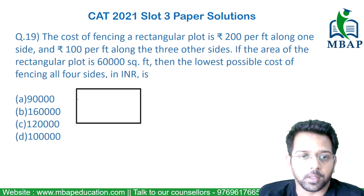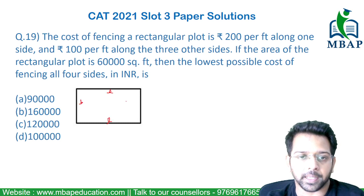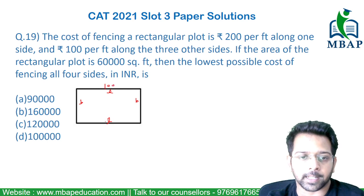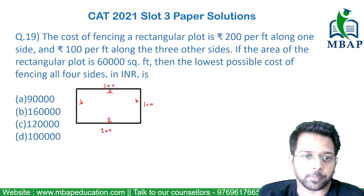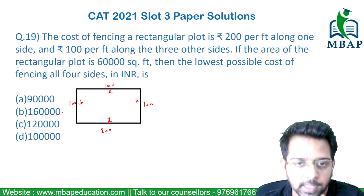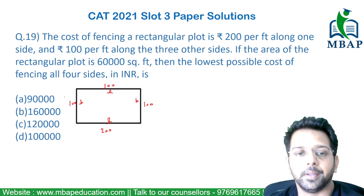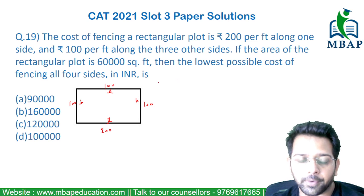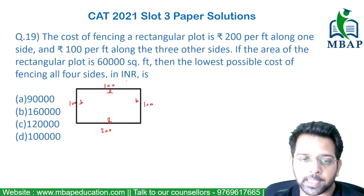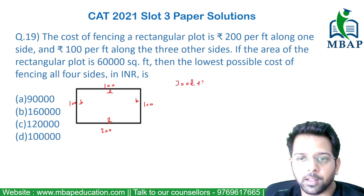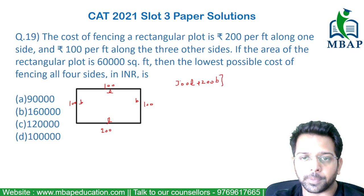How do we solve this question? Let's assume my length is L and my breadth is B. One of the lengths costs 200 and the second length costs 100 — I'm talking about cost — and B, let's assume both breadth sides to be 100 each. So my overall cost will be 300L plus 200B. This is my cost.